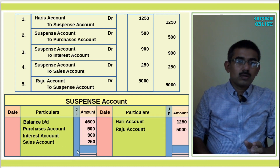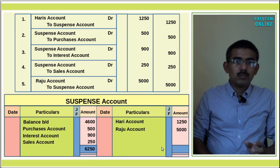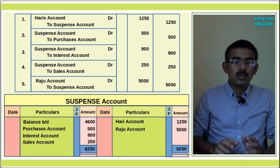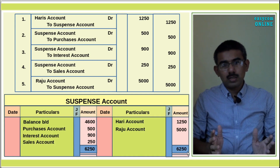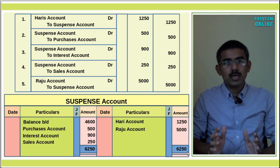The debit side total is Rs.65,250 and the credit side total is Rs.65,250. The totals are equal, confirming the suspense account is now balanced.